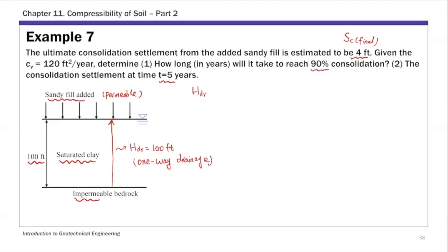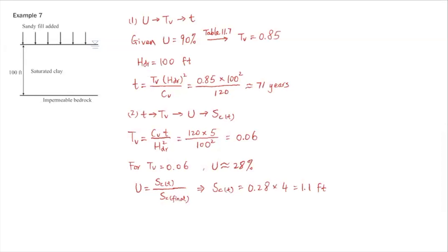Once you get the one-way drainage and HDR value, here's my solution for Example 7. The first question asks for time t to reach 90% consolidation. We're given capital U of 90 percent, and from Table 11.7, that's Terzaghi's solution.